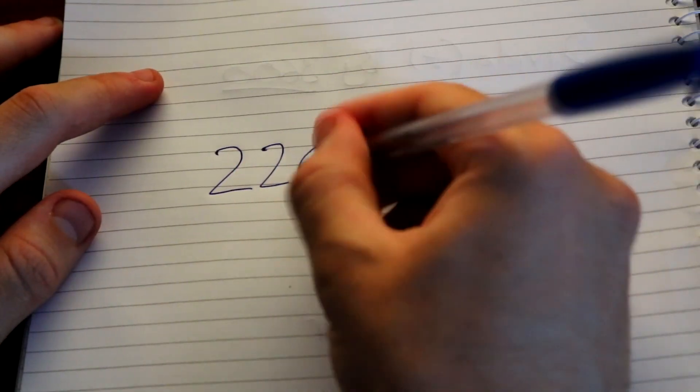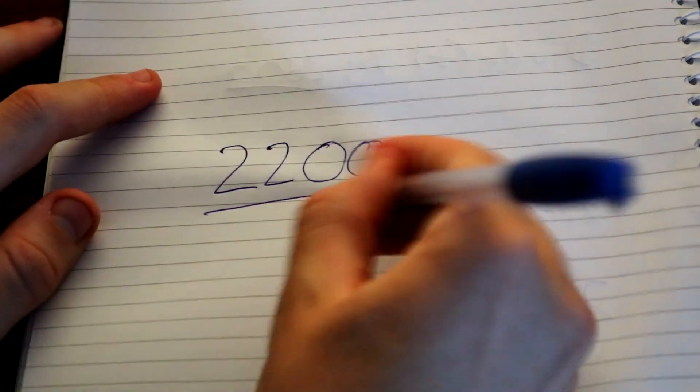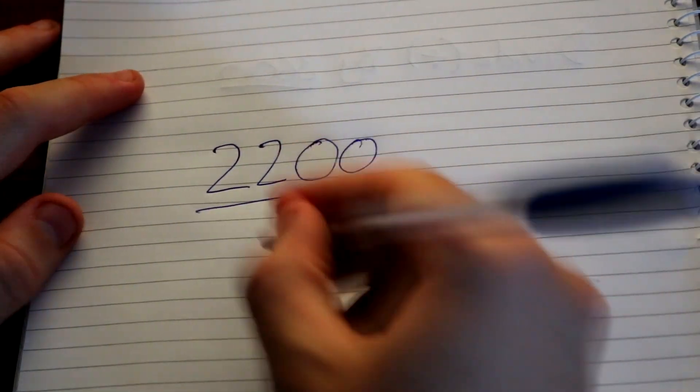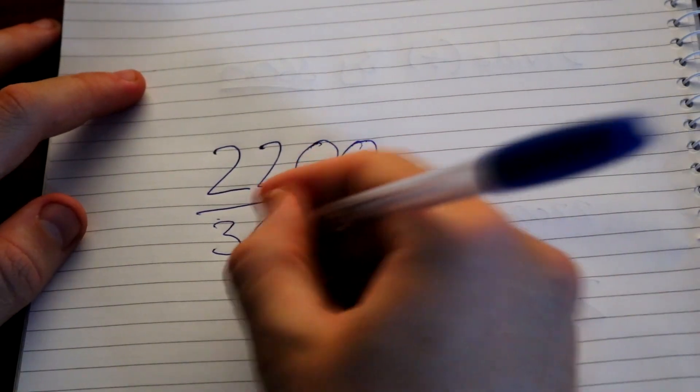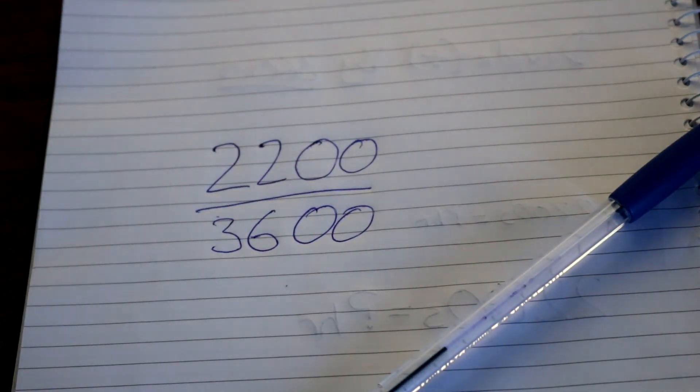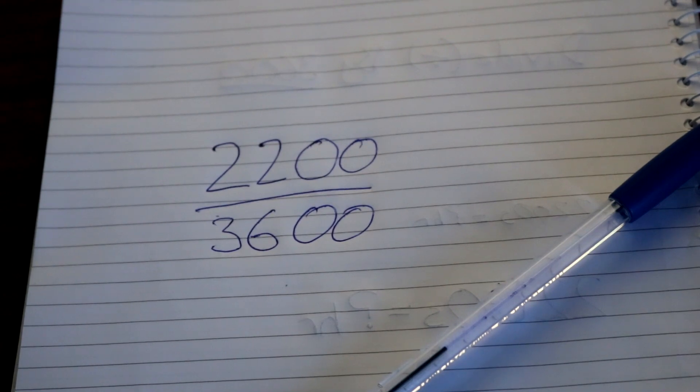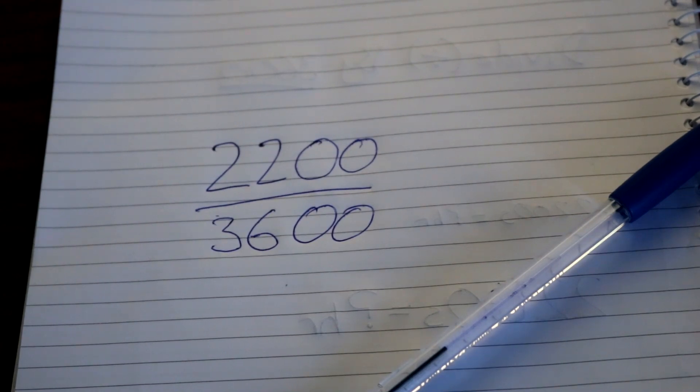Once you have the number of seconds, divide the number of seconds by 3600 because that is how many seconds are in one hour. You should also note that if you have over 3600 seconds your conversion will be greater than one hour.